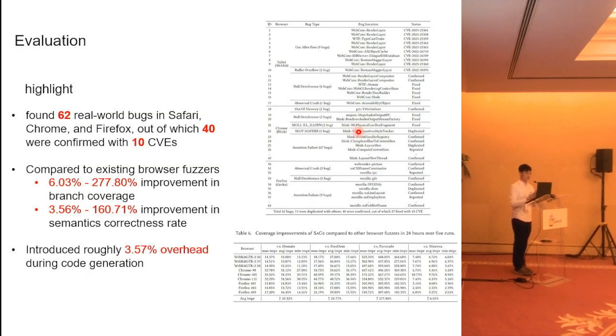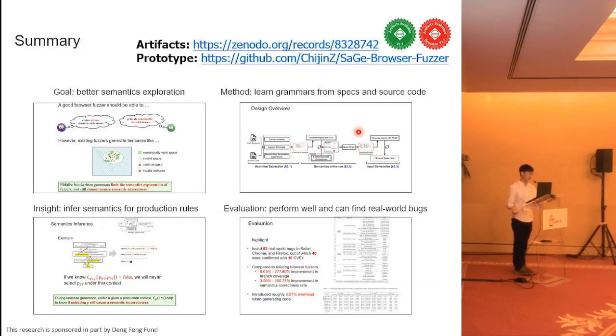According to our experiment, the performance of our fuzzer is quite good. It has found 62 real-world bugs and 10 of them are assigned CVE IDs indicating our fuzzer can trigger some critical security issues. Compared to existing browser fuzzers, our fuzzer can achieve a significant improvement and during the code generation, it will introduce a very small overhead. To sum up, we propose an automatic grammar generation for efficient browser fuzzing and our prototype achieves good performance. The artifact is available at Zenodo and also at the GitHub repository. That's all. Thank you for listening.